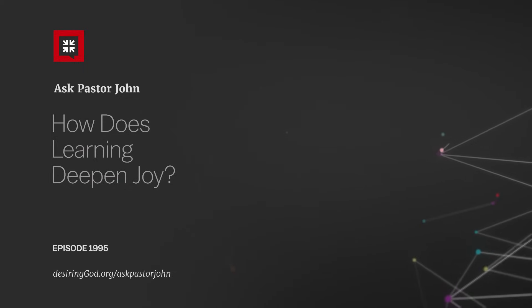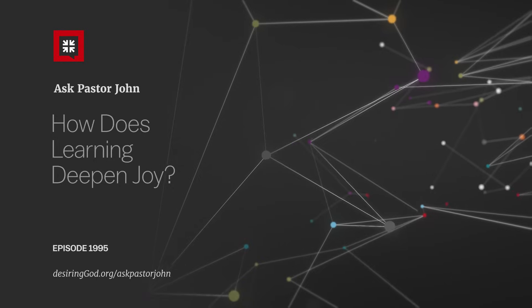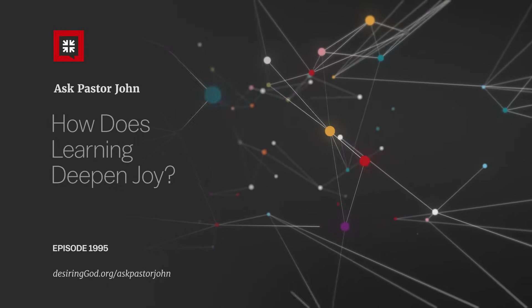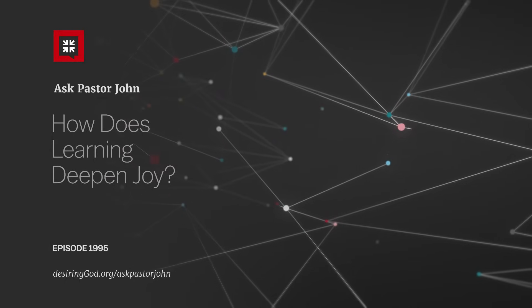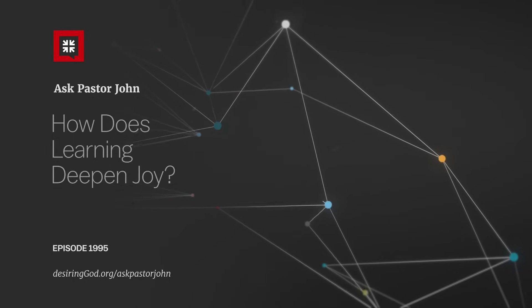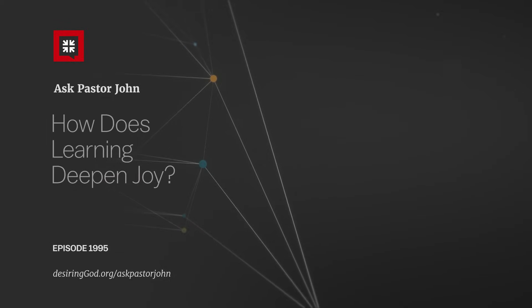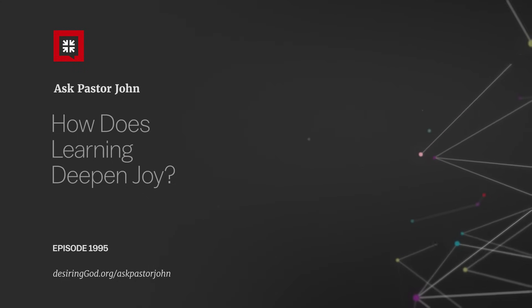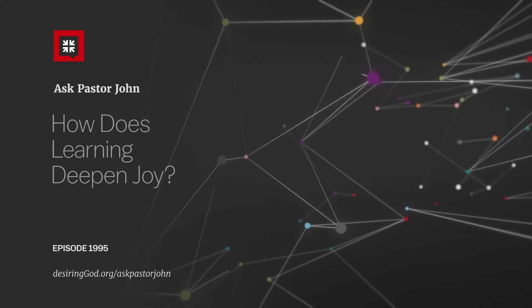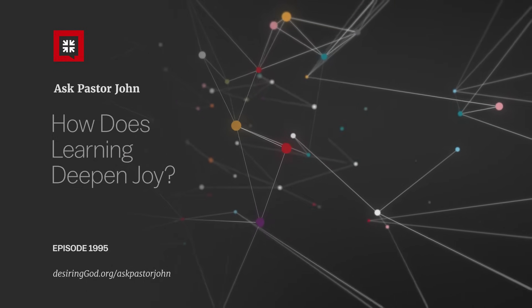So first, we observe accurately. We're honest people. Then we understand truly what we've observed. Then we evaluate fairly on the basis of accurate observation and true understanding. Then we feel appropriately. Then in all the ways of wisdom, we apply what we have observed and understood and evaluated and felt. And then we give expression with our mouth and in writing in compelling ways that glorify God and bring blessing to people.